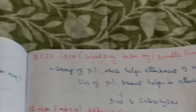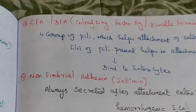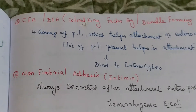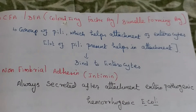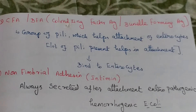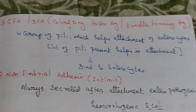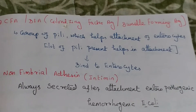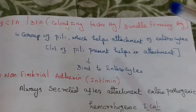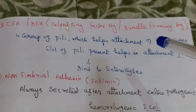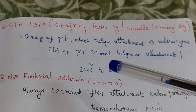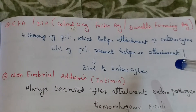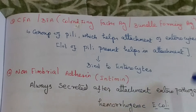The third virulence factor is CFA or BFA — colonizing factor antigen or bundle forming antigen. This is a group of pili which help in the attachment to enterocytes. Many pili presented help in attachment and binding to enterocytes.